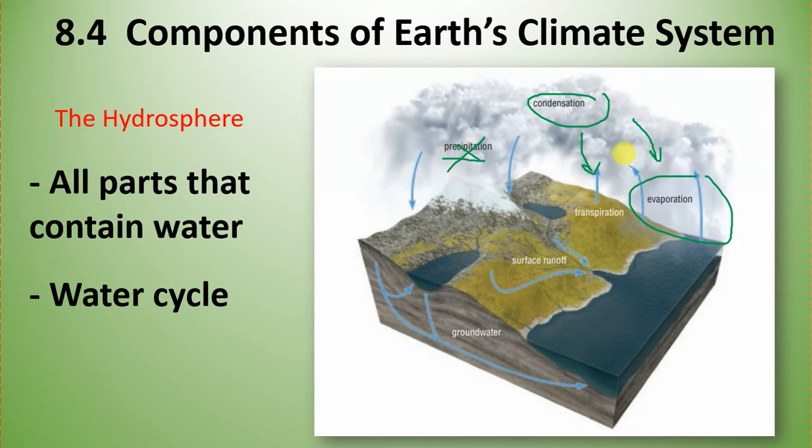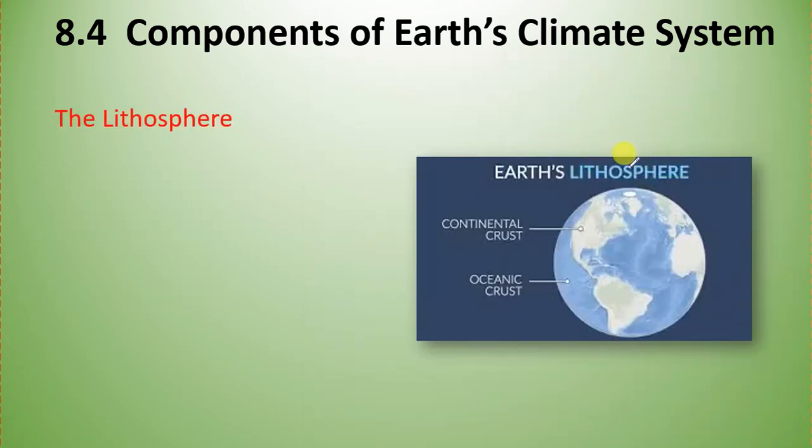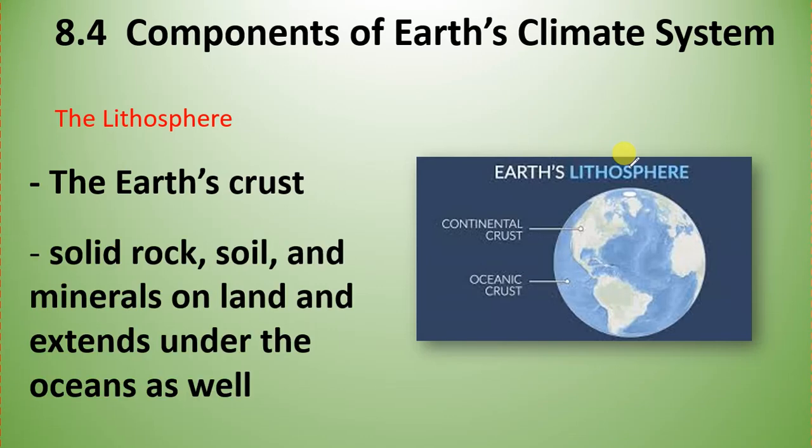We've got the lithosphere, which is essentially the Earth's crust - solid rock, soil, and minerals on land - and extends under the ocean as well. That's why we've got our continental crust and our oceanic crust. That's your lithosphere.